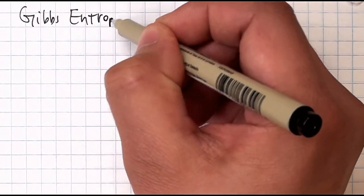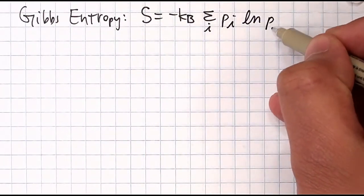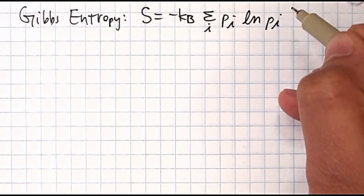J.W. Gibbs was the first to make an explicit connection between the entropy and a set of probabilities in 1878. People used this equation to work out the applications of statistical mechanics for 70 years, until in 1948.